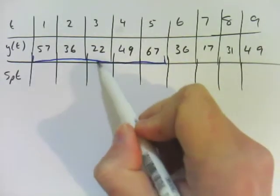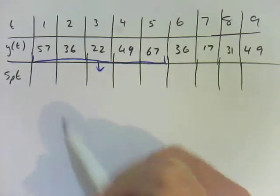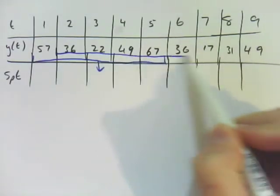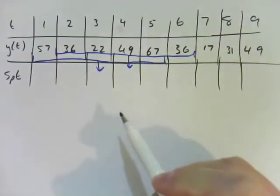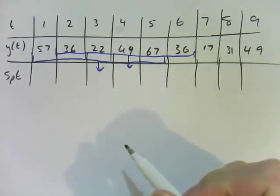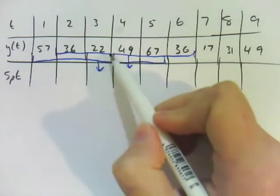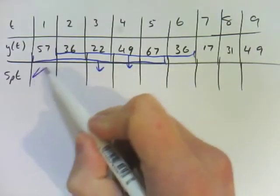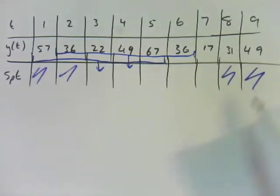And then we will take the second 5 points, and that will go into that one. So the whole process is the same, but instead of taking just 3 points, you take 5. And this will mean you will lose 2 points on either end of your data. So they won't have values.